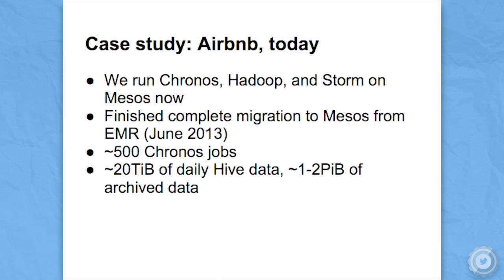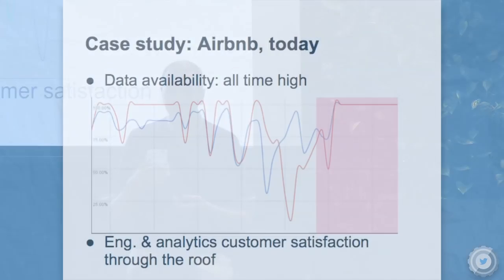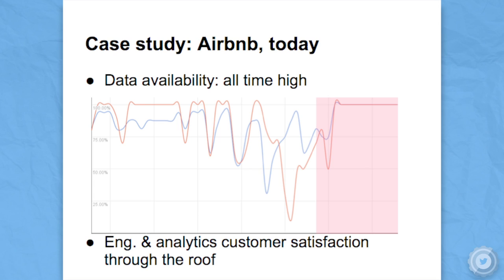Today we run Kronos, Hadoop, and Storm all on the same Mesos cluster. We finished our migration in June of this year, so it's pretty recent. We have about 500 Kronos jobs that run, about 20 terabytes of daily data, and somewhere in the order of one to two petabytes of archive data. Our data availability is actually at an all-time high now and everyone is really happy about it. Jobs run faster, they finish sooner, things are easier to debug. It's also great that people get to use the newest Hive and Pig and tools like that.